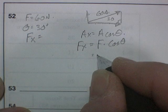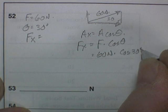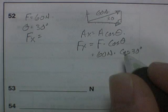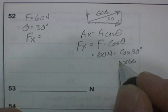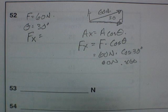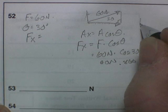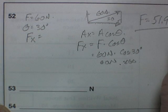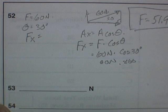I plug in 60 newtons times the cosine of 30 degrees. The cosine of 30 degrees is 0.866. Multiply that by 60 newtons and that gives me 51.9 newtons. I imagine 52 would be acceptable. That's the first part of the problem.